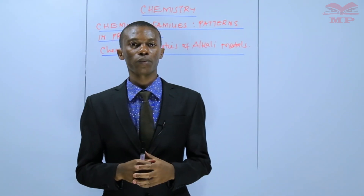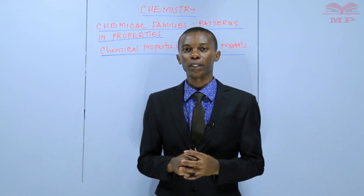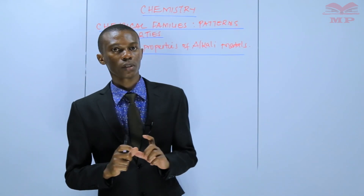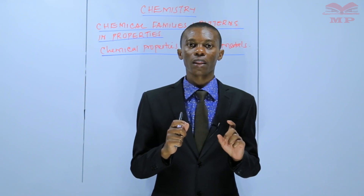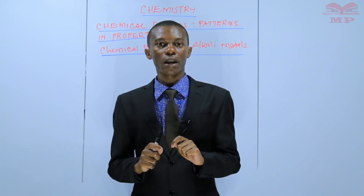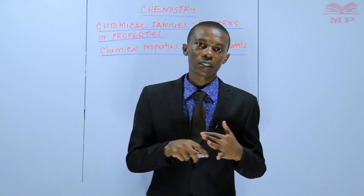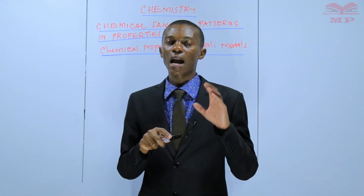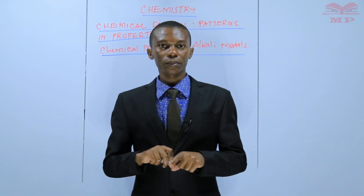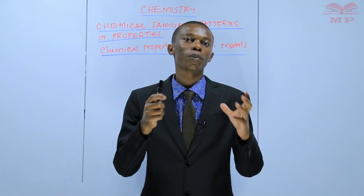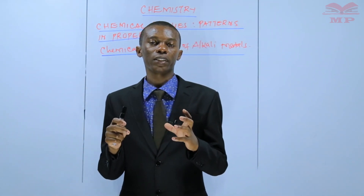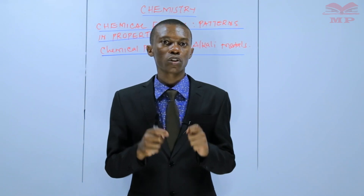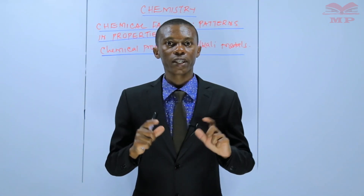The subtopic for this lesson is Chemical Properties of Alkali Metals. But just before we get into this lesson, in the previous lesson we were discussing the physical properties of alkali metals. These physical properties were ease of cutting, appearance, melting and boiling point, electrical conductivity, and ionization energy. Therefore, ensure that you've understood the physical properties and the trends in those physical properties, because you are going to use them later in this topic.